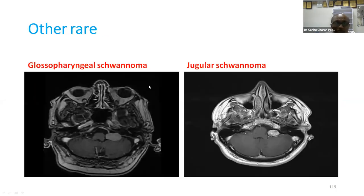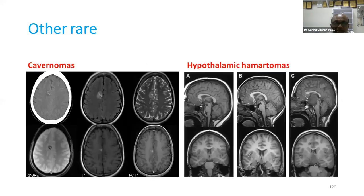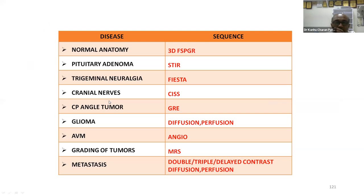Other conditions like glossopharyngeal schwannoma, jugular schwannoma, cavernomas, and hypothalamic hematomas also benefit from contrast imaging. In summary for sequence selection: pituitary needs STIR; trigeminal needs FIESTA; cranial nerve cistern needs CISS; CP angle needs GRE; glioma needs diffusion and perfusion; AVM needs angio; grading needs MRS; and metastasis needs double, triple, and delayed contrast with diffusion and perfusion.